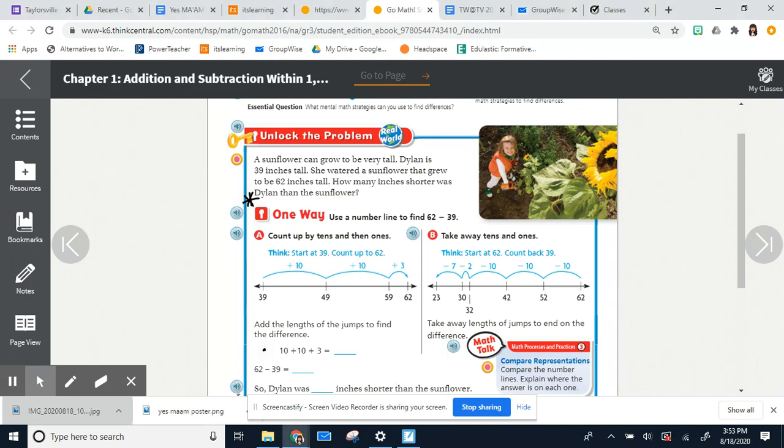But then there's another way we can also do what they're doing here in part B. We can take away tens and ones. So this time we're starting at 62 on the right. And then we're going to count back 39.